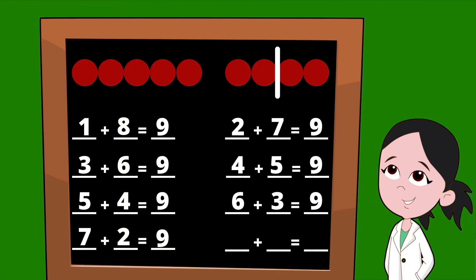We're going to slide that line over just one more time to get our last set of partners for the number nine. To the left of our line, we have eight dots, so our first partner is the number eight. To the right of our line, we have just one dot, so the second partner is the number one. Eight plus one equals nine.